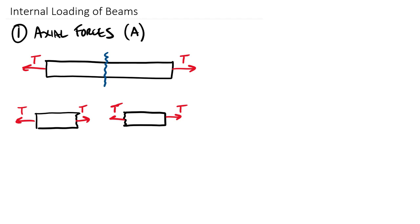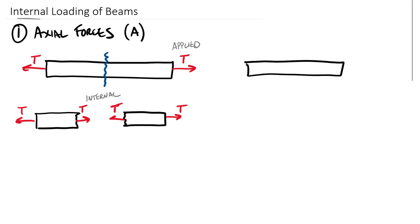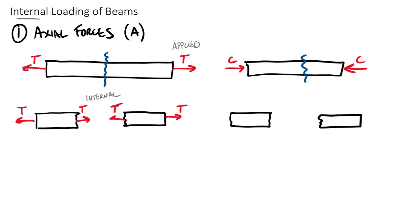A few definitions: we call these applied forces — applied to the outside. These may come from interaction with another member, but for this one body we call those applied, and the two exposed internal forces are called internal. The other kind of axial force is compression — compression always pushes. If we cut this member in the middle and draw two separate free body diagrams, we see applied compression, applied compression, and internal compression as well.